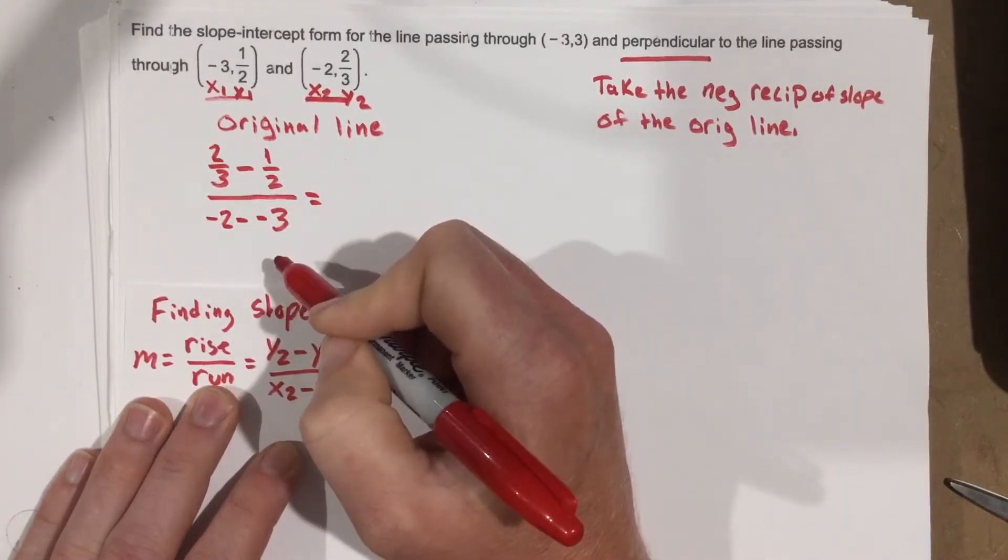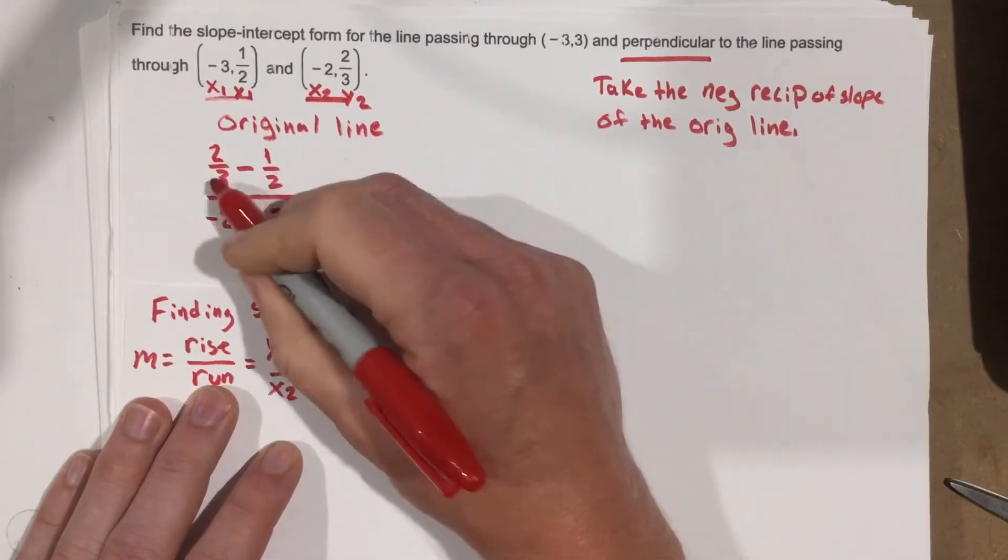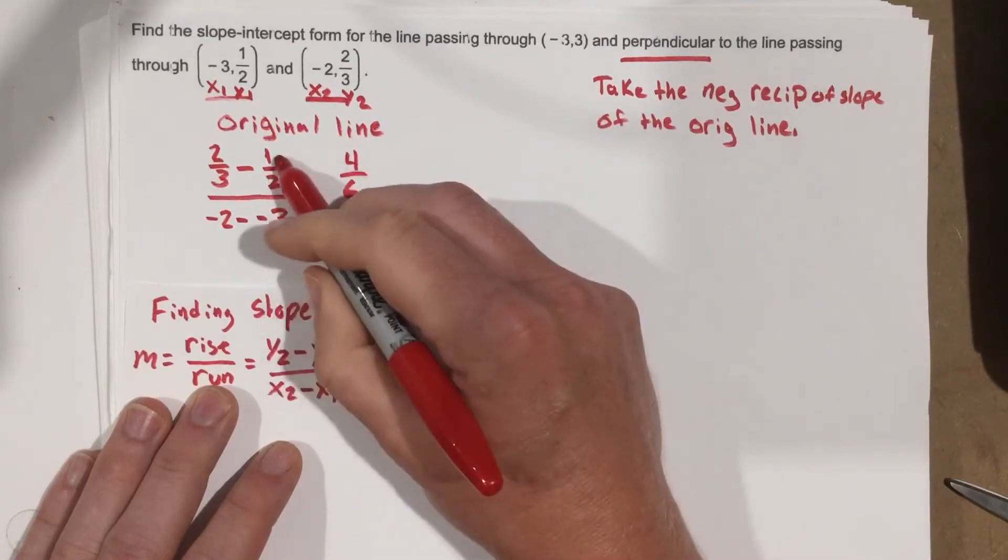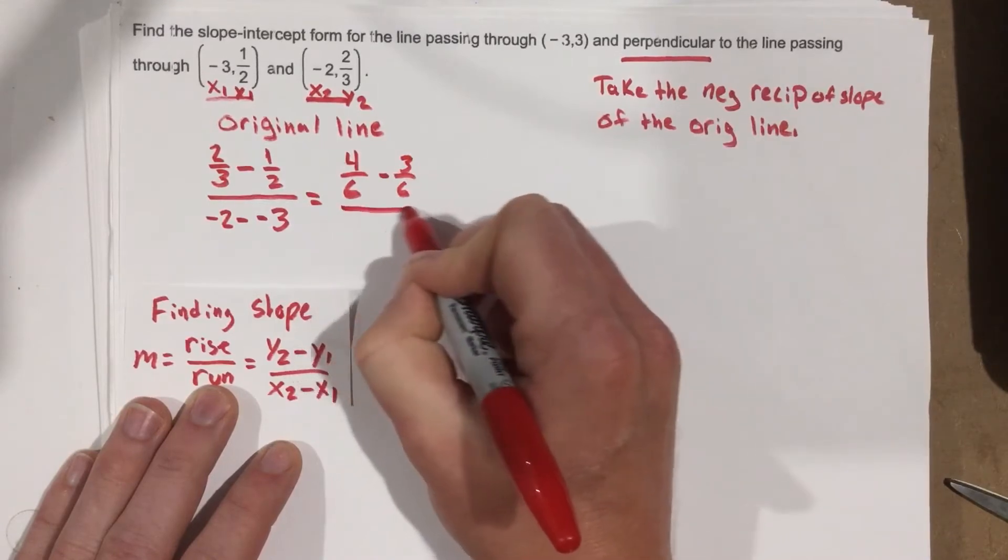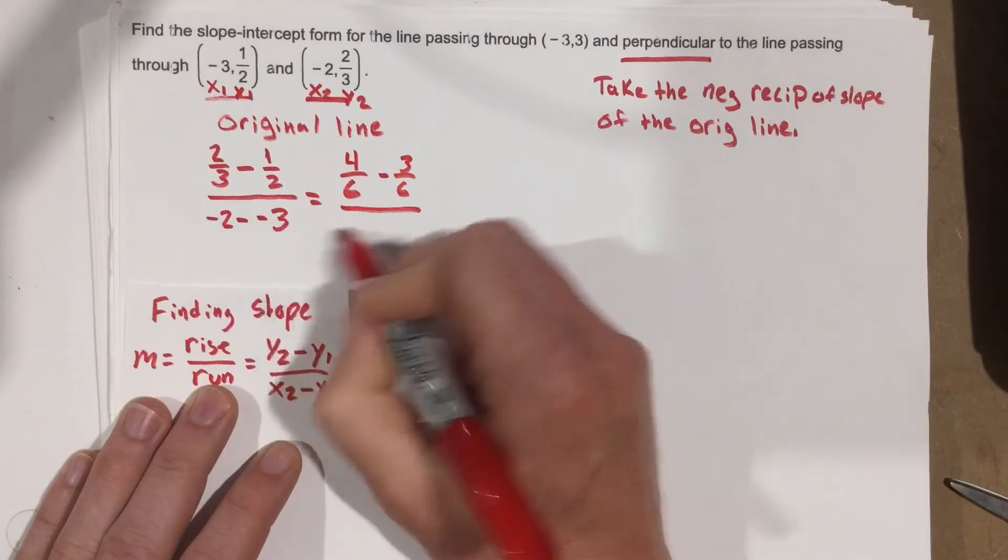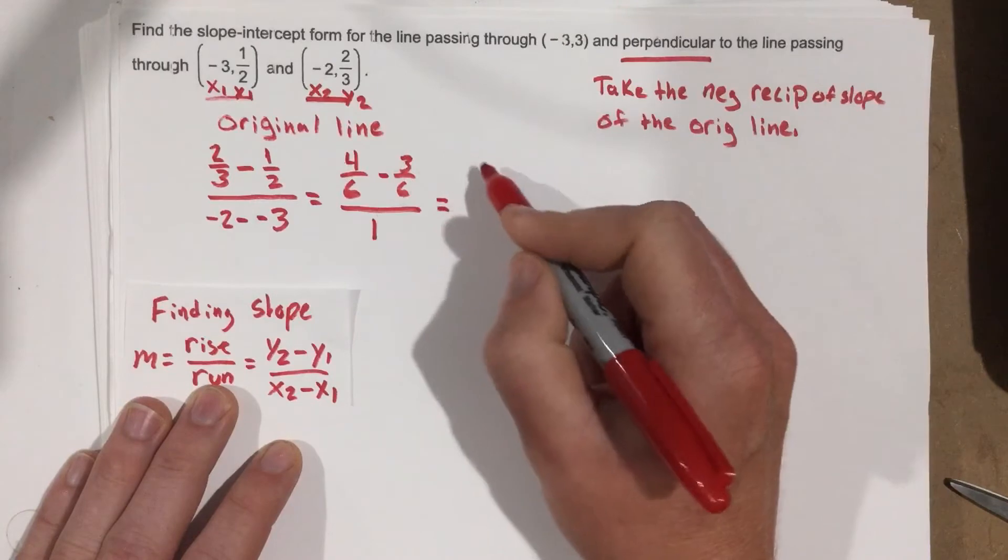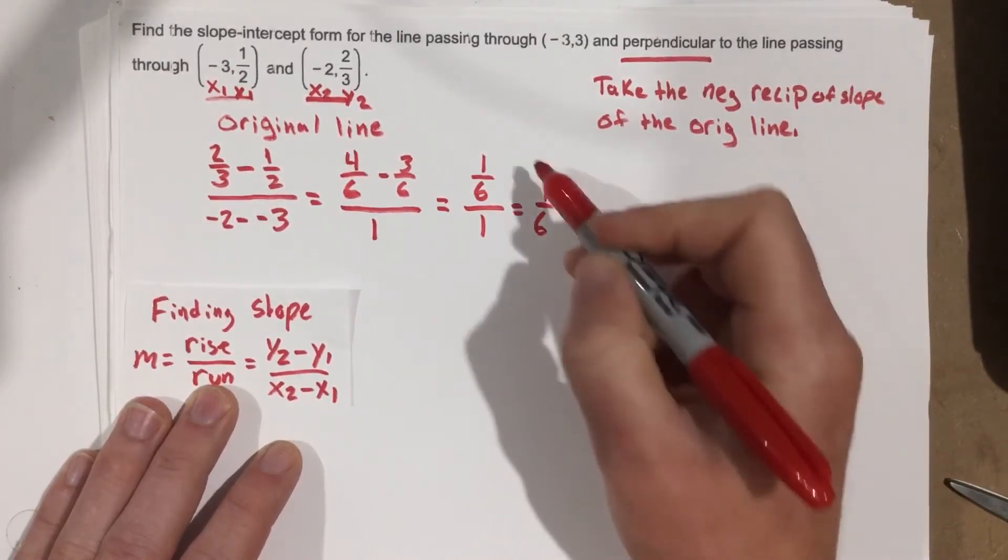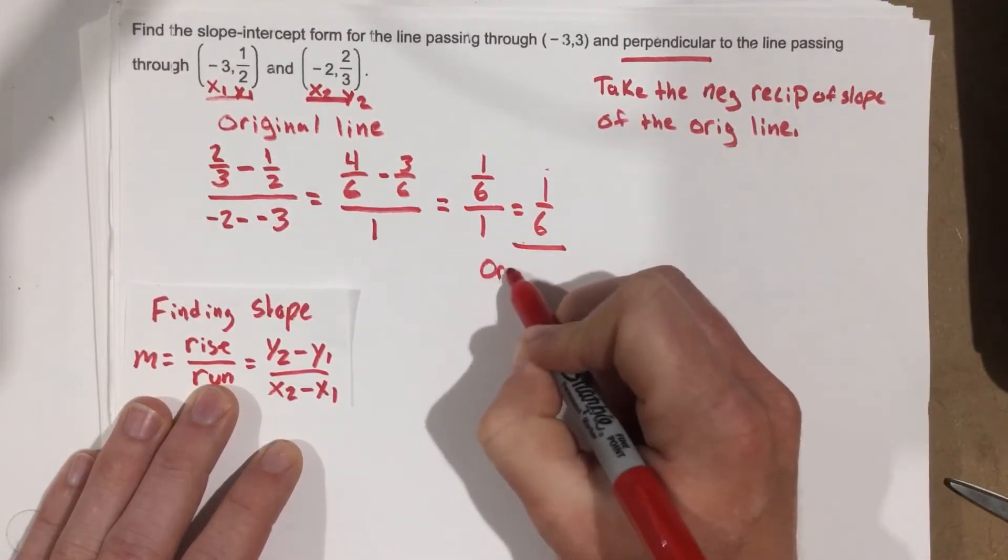So we have 2/3 minus 1/2 on top. Let's find a common denominator. We know the common denominator between 3 and 2 is going to be 6. So let's make that 4/6 by multiplying the top and bottom by 2. Multiply the top and bottom by 3 here, and you get minus 3/6, over negative 2 minus negative 3. Well, that becomes a positive, so that's negative 2 plus 3, which is 1. I subtract on top, I get 1/6 over 1, which we know is just 1/6. So this is the slope of the original. So we're going to call that the original slope.